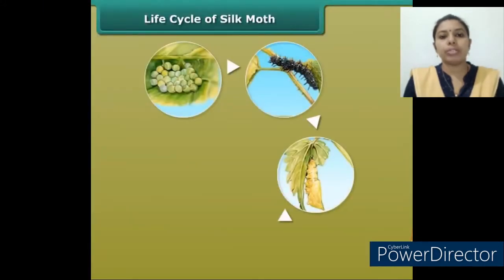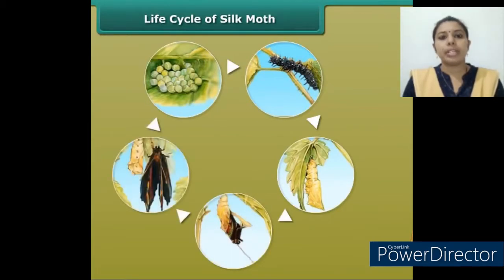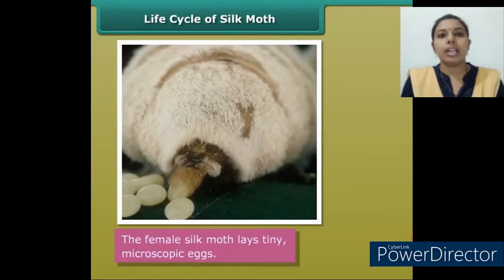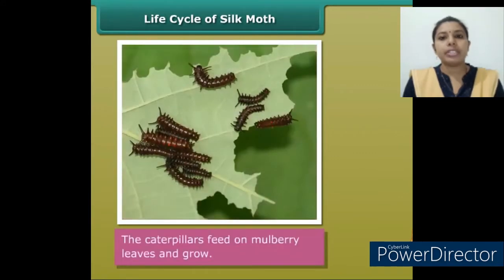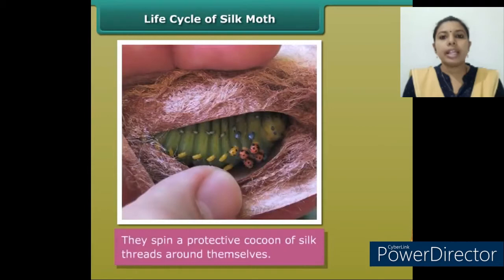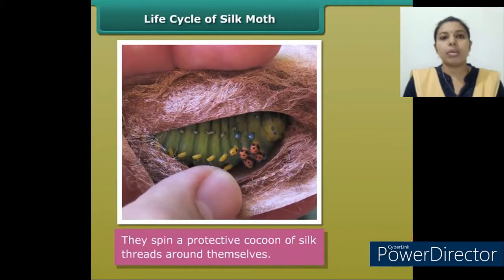Life cycle of the silk moth: The life cycle of the silk moth begins with the laying of microscopic eggs and ends with the emergence of a beautiful moth. The female silk moth lays tiny microscopic eggs. Tiny black caterpillars or larvae emerge from these eggs. These caterpillars feed on mulberry leaves and grow. Then they spin a protective cocoon of silk threads around themselves. These cocoons are white or golden in color.